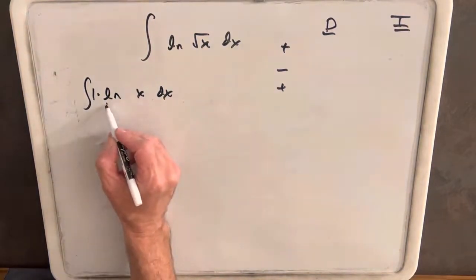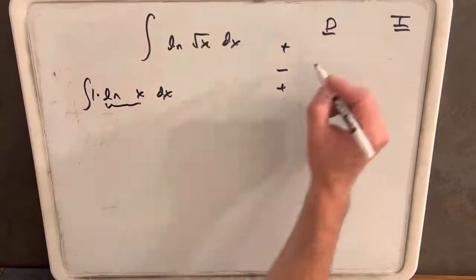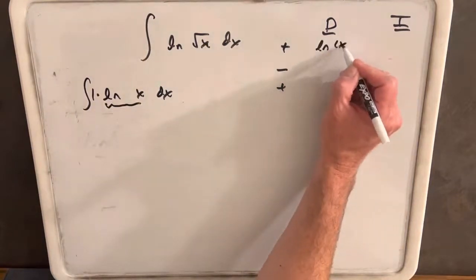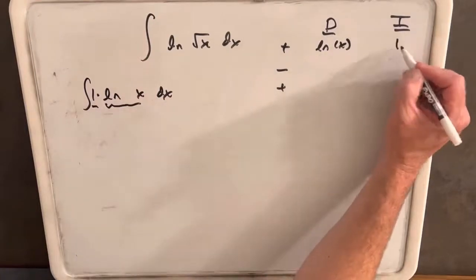Now, since we don't have a direct way to integrate the natural log of x, we'll choose that to differentiate. And then we've created this second function, 1. We'll integrate 1.